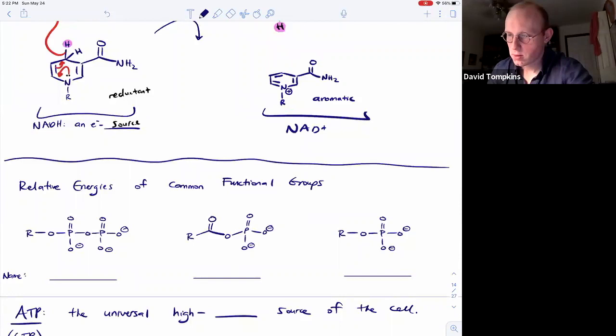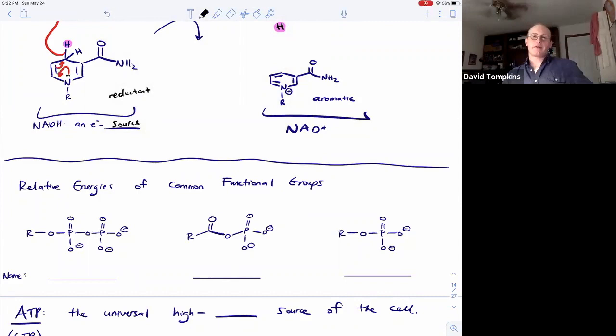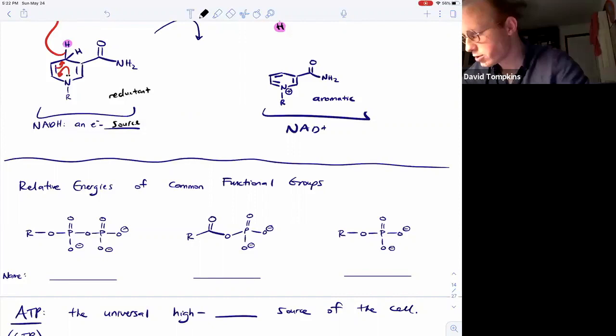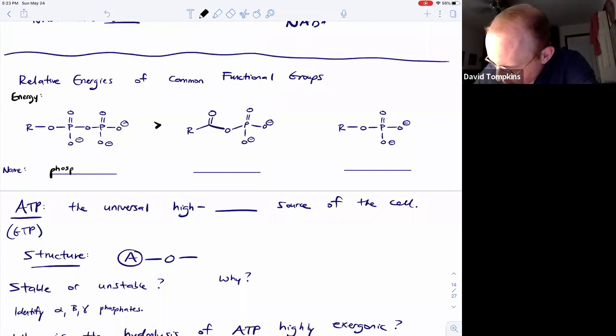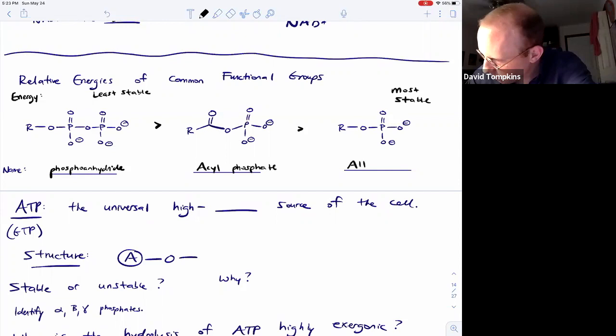So not only are reducing agents and oxidizing agents going to be of great concern during this unit, but so are high-energy phosphate compounds. We're going to see phosphorylation as a key reaction to understand in glycolysis and gluconeogenesis especially. So there are three different phosphate-containing functionalities here and I have them in terms of relative energy, where the one on the far left, the phosphoanhydride, is less stable than the acyl phosphate, which is less stable than the alkyl phosphate.